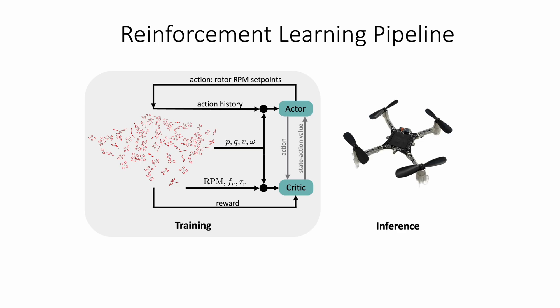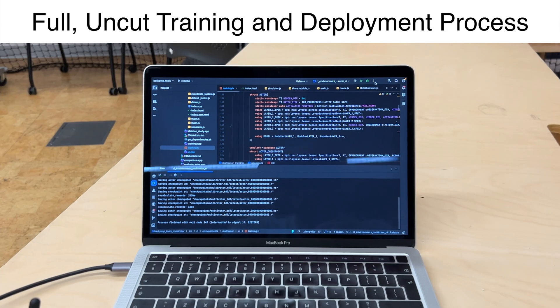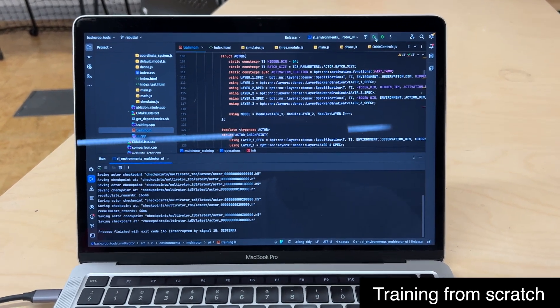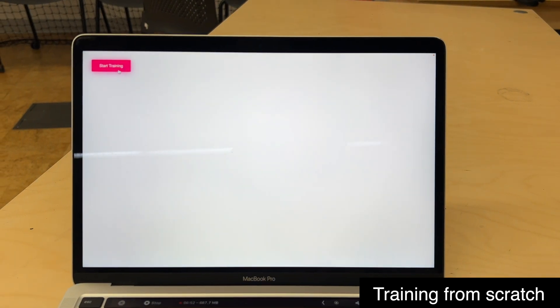For inference we directly deploy the trained end-to-end control policy onto the microcontroller of the quadrotor. In the following we show the full, uncut process, from training from scratch in simulation over compiling the trained policy into the firmware to flashing the firmware and flying.